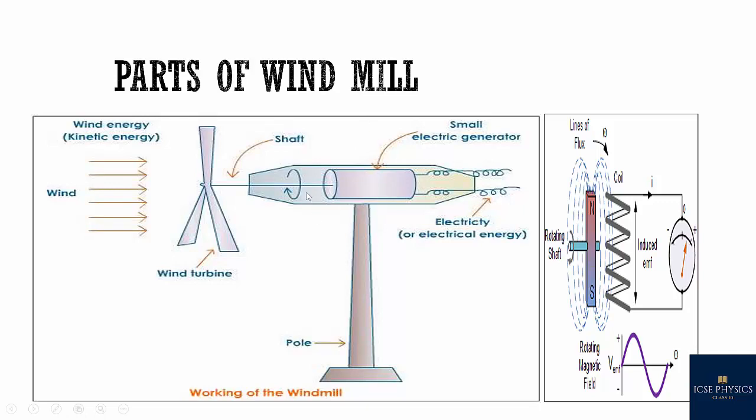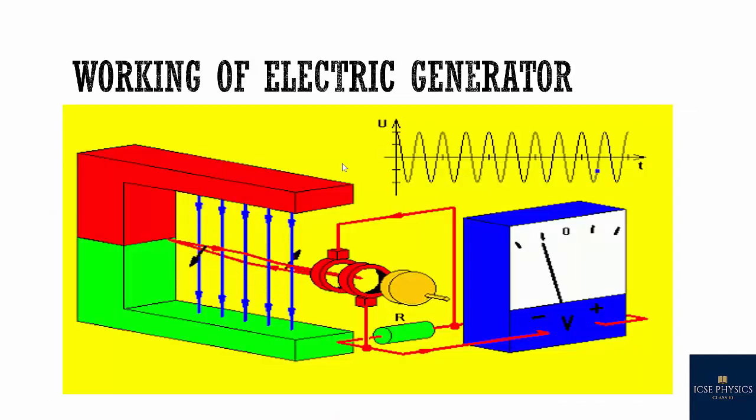So let's remember how electric generator works. Remember Faraday's law of electromagnetic induction. Whenever there is a change in magnetic flux linked with the coil, an alternating EMF is induced. So when the armature coil moves within a magnetic field, that is when the coil is rotated within the north and south pole of a strong magnet, the magnetic flux linked with the coil changes and therefore an EMF is induced between the ends of the coil.